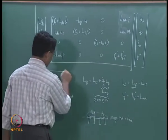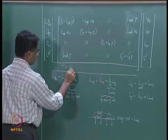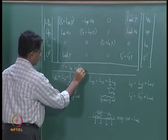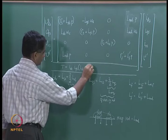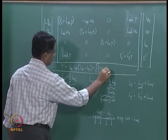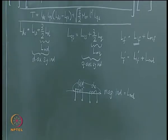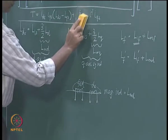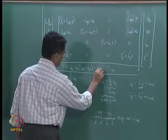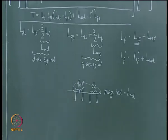The electromagnetic torque expression involves i_ds, i_qs, l_ds, and l_qs. When replacing with stator-referred terms, the mutual term becomes l_md times i_f'. These are the equations referring the machine to the stator turns in the synchronous reference frame.